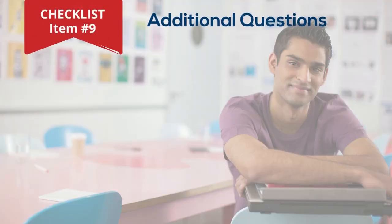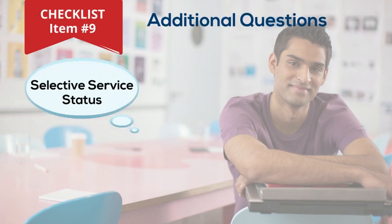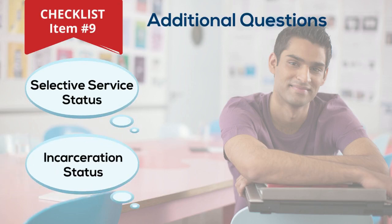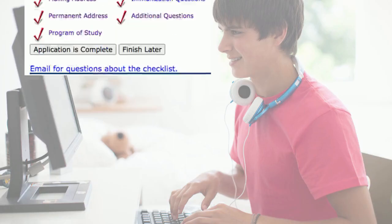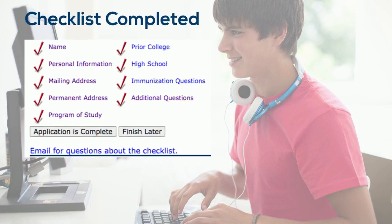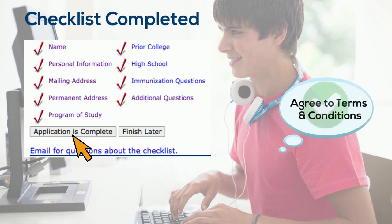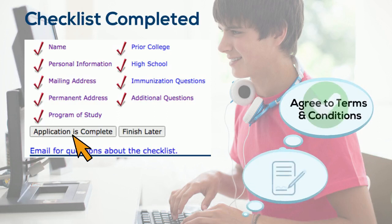Checklist item number nine is the last section on the application. The questions concern your selective service status and if you are currently imprisoned and serving a criminal sentence. Congratulations — you've successfully completed all application checklist items! Your next step is to submit your application by clicking on the application is complete button. Once submitted, you'll be asked to agree to terms and conditions and sign your name.